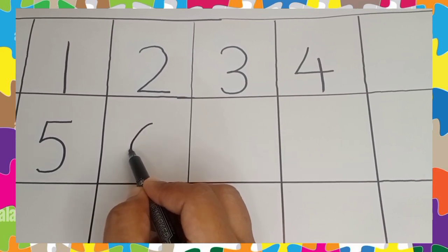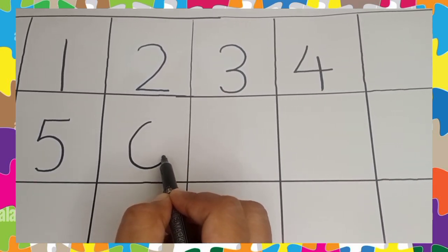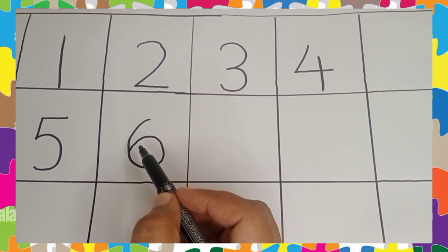Slant down, curving round and round. This makes the number 6.